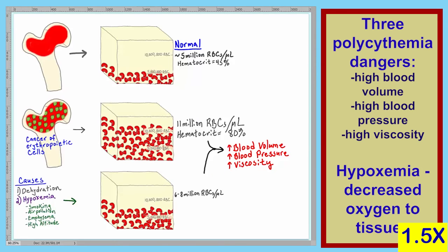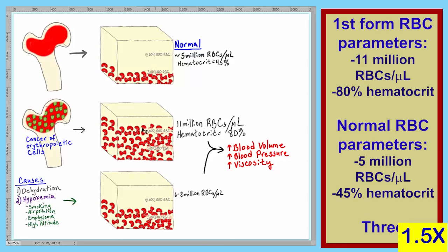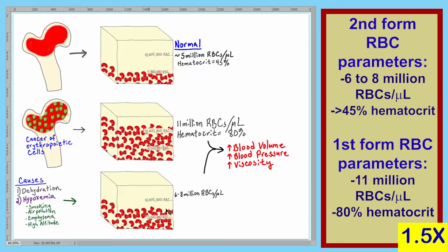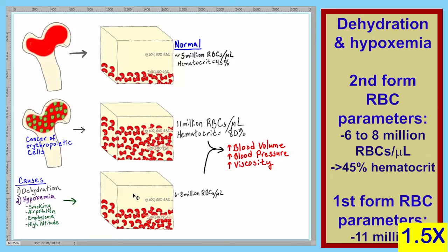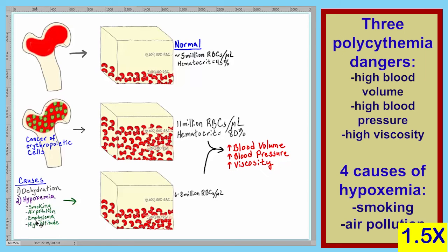In the normal situation, our red bone marrow produces about 5 million red blood cells per microliter of blood, with a normal hematocrit of about 45%. In the first form of polycythemia, the cells of the erythropoietic cell line become cancerous, producing excess red blood cells — as high as 11 million RBCs per microliter — with a hematocrit of about 80%. In the second form, the RBC count is between 6 and 8 million per microliter. Causes include dehydration and hypoxemia, which may result from smoking, air pollution, emphysema, or high altitude. The three primary dangers are increased blood volume, increased blood pressure, and increased viscosity.